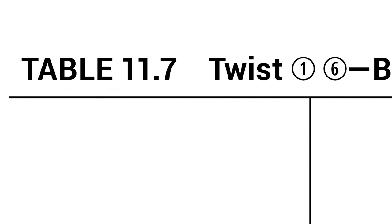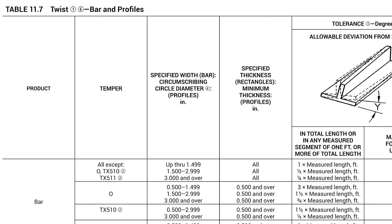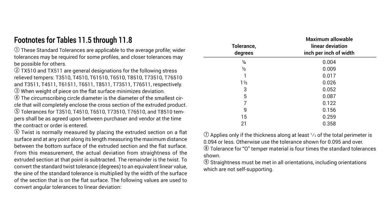Table 11.7 of AS&D defines the standard tolerance for twist in extruded bar and profiles. Several footnotes are provided to assist in the uniform interpretation of these tolerances. During this video, we will focus on footnotes 3, 6, and 9.